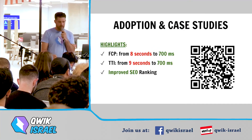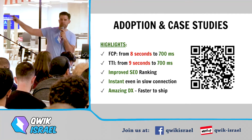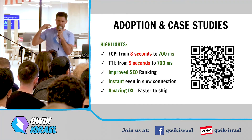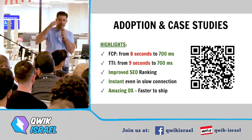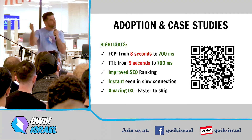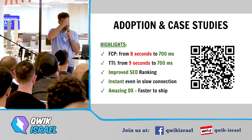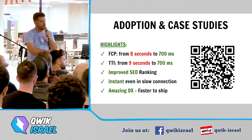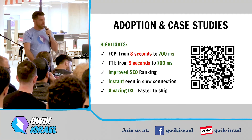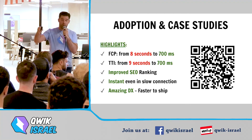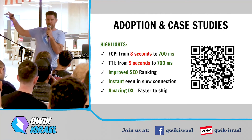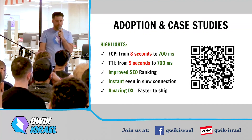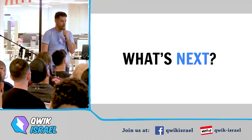Here's a QR code for our announcement event where we interviewed two companies that used Qwik since beta. These are their reported results: First Contentful Paint went from 8 seconds to 700 milliseconds, Time to Interactive went from 9 seconds to 700 milliseconds, improved SEO ranking, instant even on slow connections — they demoed in a meeting room notorious for bad connectivity and it worked. They also reported amazing developer experience.